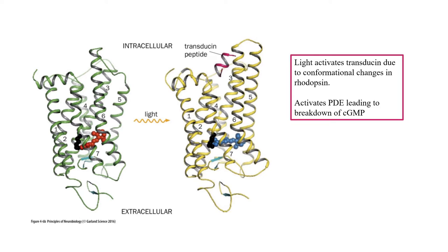Rhodopsin is incredibly sensitive to light, which allows low-resolution vision in low light conditions. However, when exposed to light, it bleaches, causing temporary blindness. Rhodopsin in humans becomes fully regenerated in around 30 minutes, which is why it takes about 30 minutes upon entering a dark room before your night vision develops.